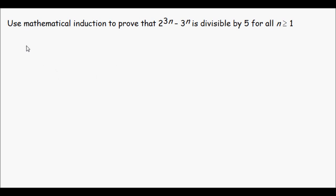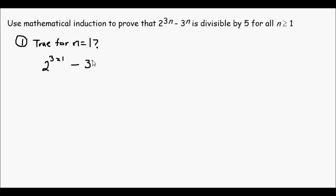The first step of mathematical induction is always the basis test, which is to see if this expression holds true for n equal to 1. I'll put a question mark because we're just going to test if it is true or not. So if n equals 1, I get 2 to the 3 times 1 minus 3 to the power of 1, and that's equal to 2 to the power of 3, which is 8, and 3 to the power of 1 is 3. So I get 8 minus 3 which is equal to 5. And is 5 divisible by 5? Yes it is. So the basis test validates this condition.